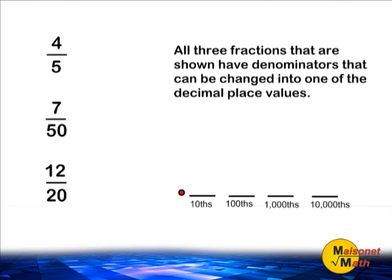Sometimes you are given fractions with denominators that can be easily changed into one of the decimal place values. In other words, a denominator can be changed into either a 10 or a 100, a 1,000, or any other power of 10. Let's take these fractions for example. We are going to convert all three of these fractions into a decimal by first writing an equivalent fraction with denominators that are a decimal place value.